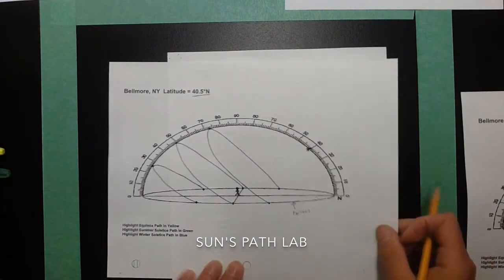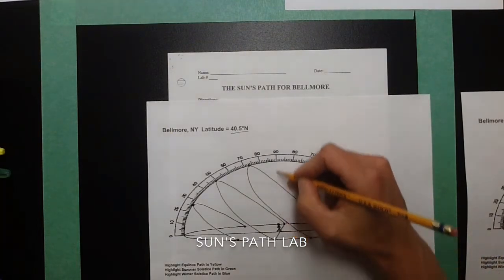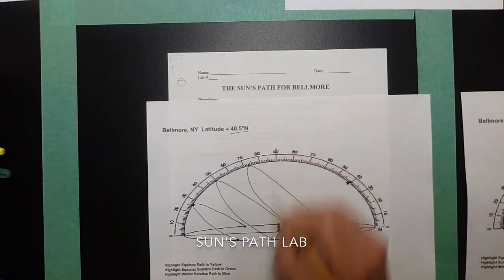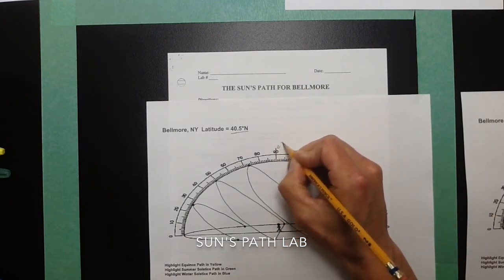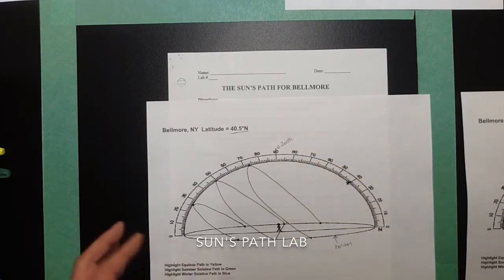The zenith is the imaginary point directly overhead. So we start off at the observer. I'm going to go to directly above an altitude of 90 degrees. Directly overhead would be the observer's zenith.